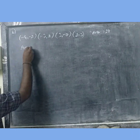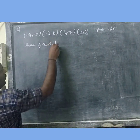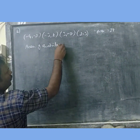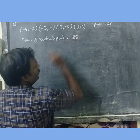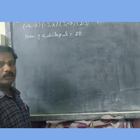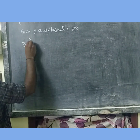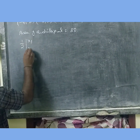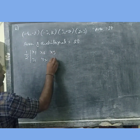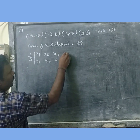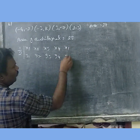The area of the quadrilateral is 28. The formula is 1/2 times x1y1, x2y2, x3y3, x4y4, x1y1.